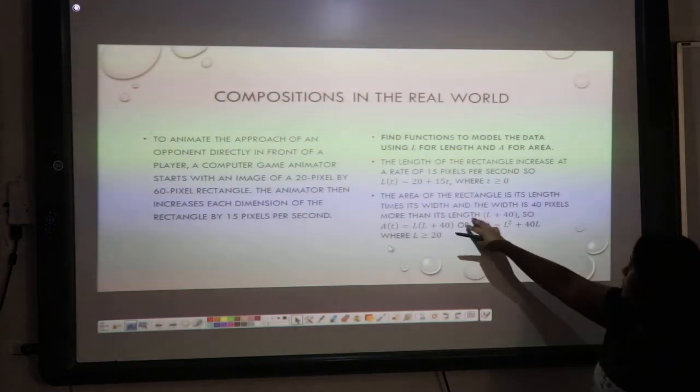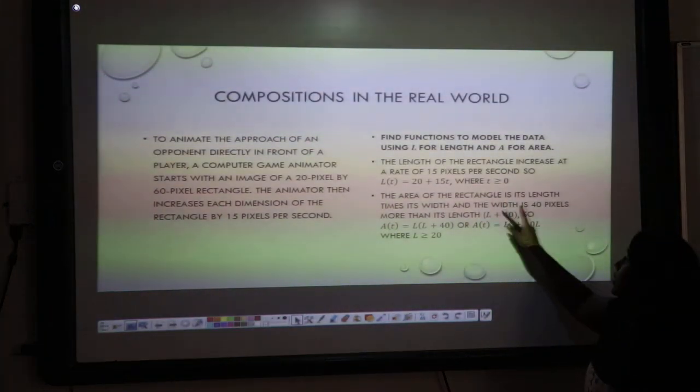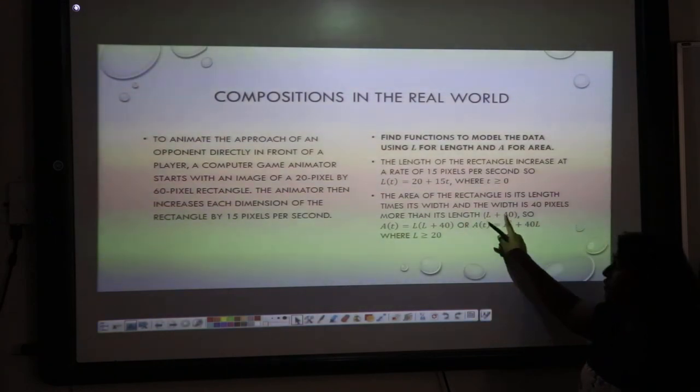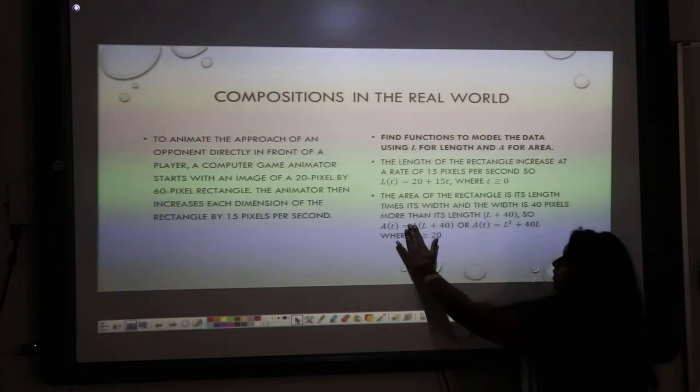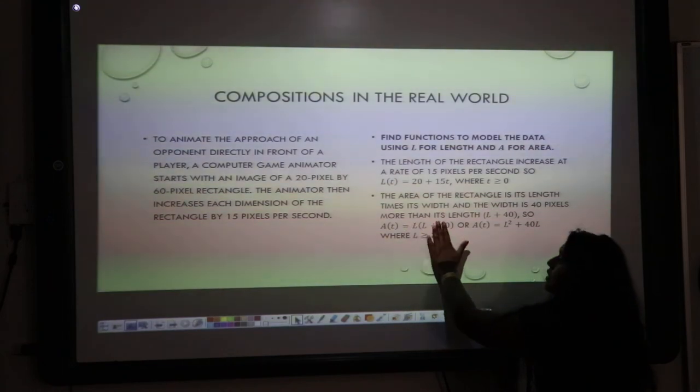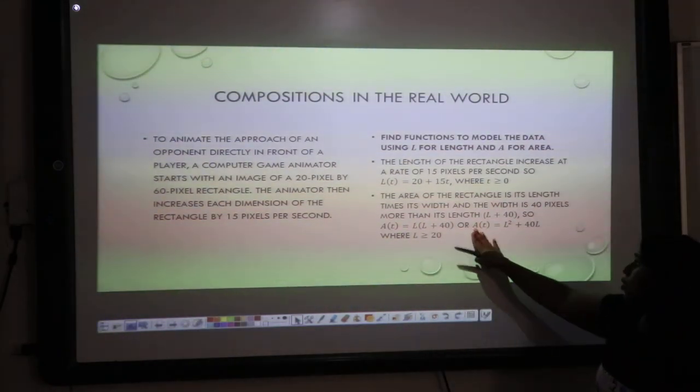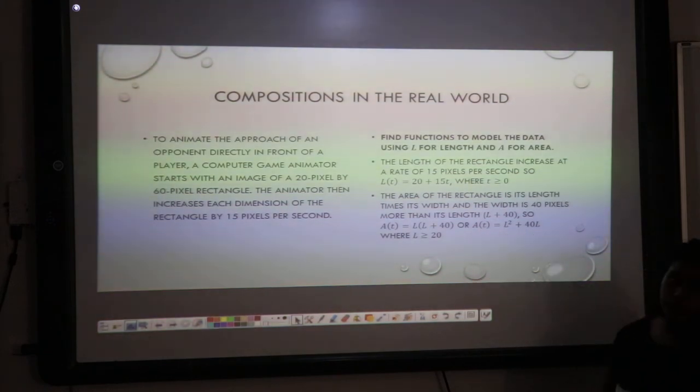The area of the rectangle is length times width. My width is 40 pixels more than its length. Therefore, my width is L plus 40. So, my area is going to be my length times my width. And I got it in terms of one variable, my length. Or, area is equal to L squared plus 40L.